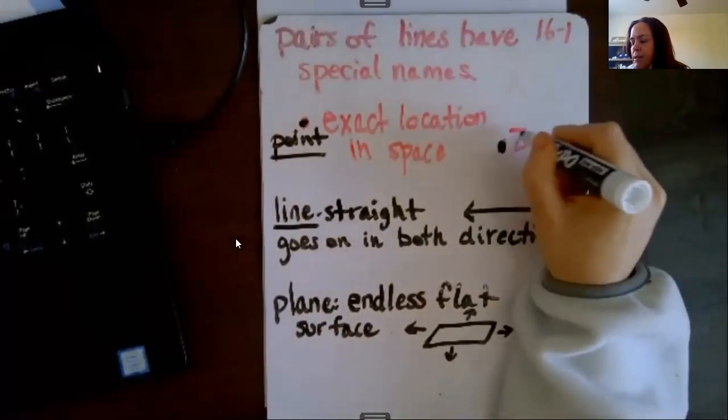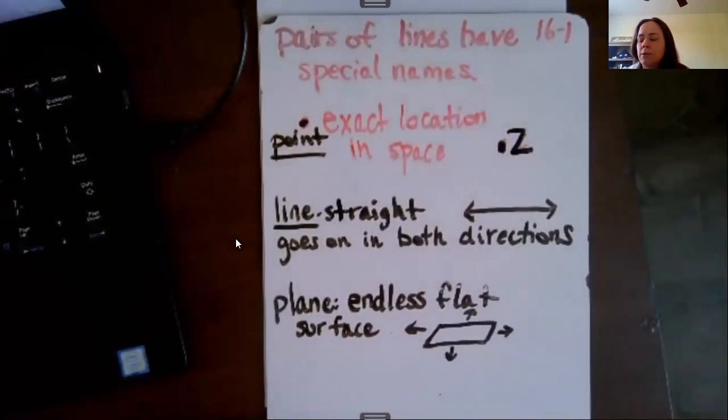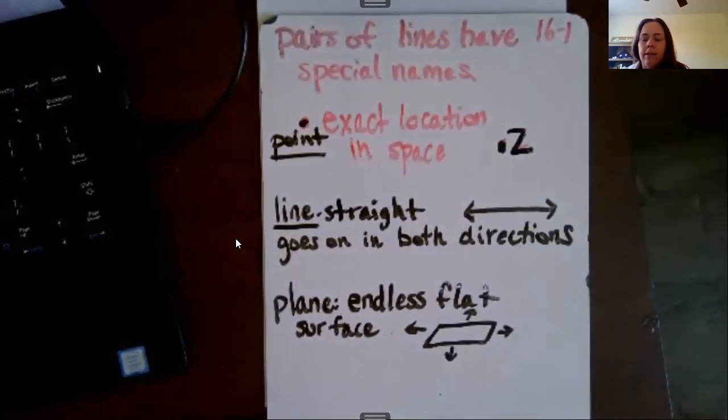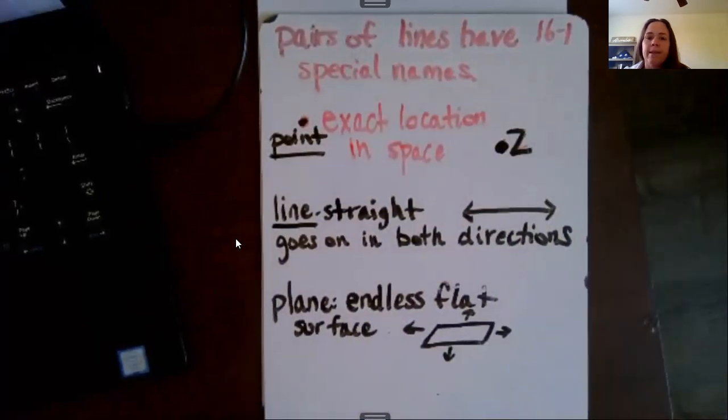So this would be, as you see, this is called point Z. A lot of times, if you remember in geometry, they'll label different lines and different things with letters to help you identify what they're talking about. So this would be called point Z.